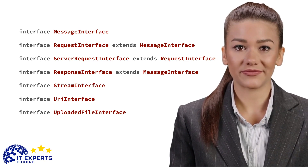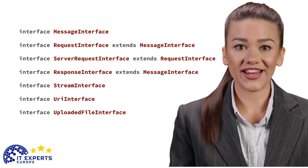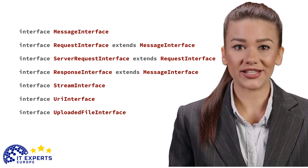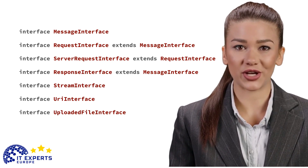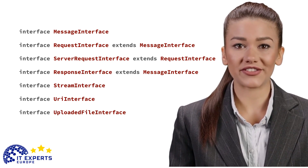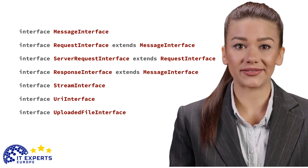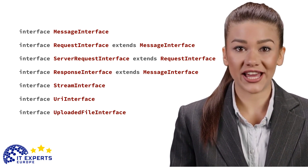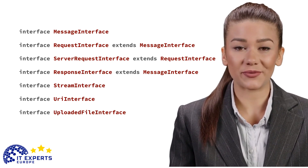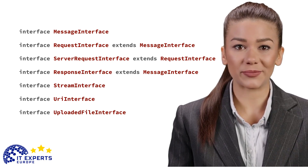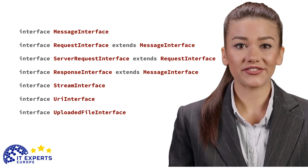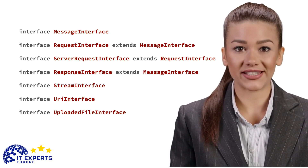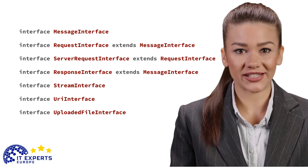Request Interface: Representation of an outgoing, client-side request. Per the HTTP specification, this interface includes properties for each of the following: protocol version, HTTP method, URI, headers, and message body. During construction, implementations MUST attempt to set the host header from a provided URI if no host header is provided. Requests are considered immutable. All methods that might change state MUST retain the internal state of the current message and return an instance that contains the changed state.